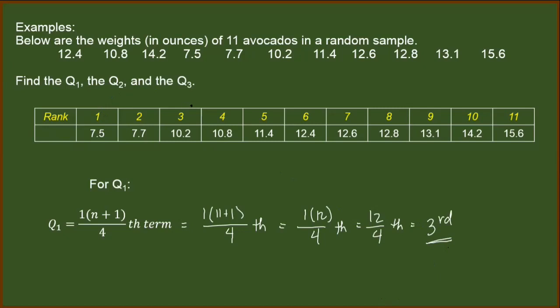So the third in the rank is this one, meaning this is the first quartile. Q sub 1 is equal to 10.2 ounces. So that is for the first quartile.